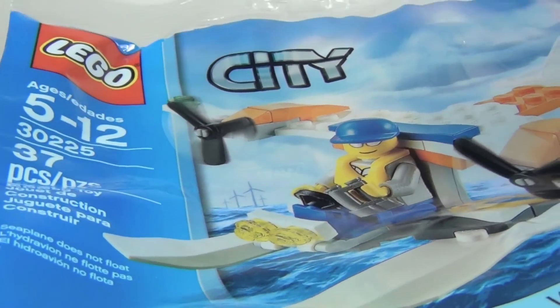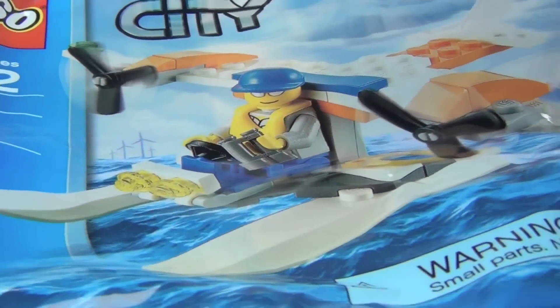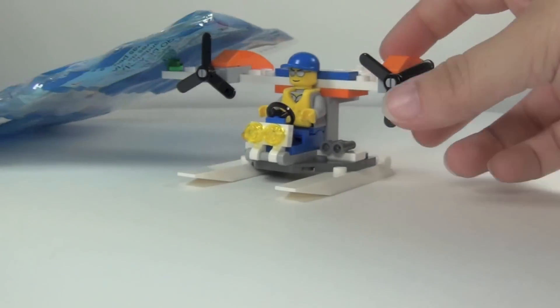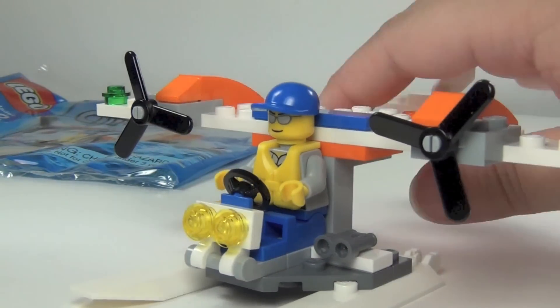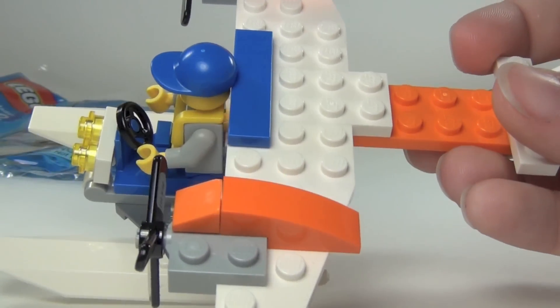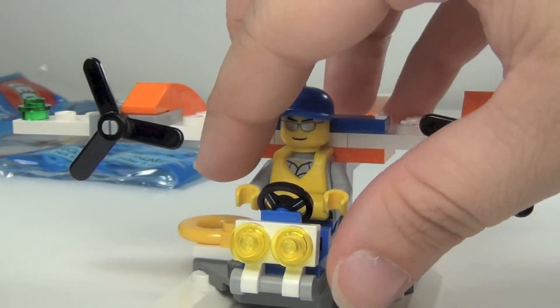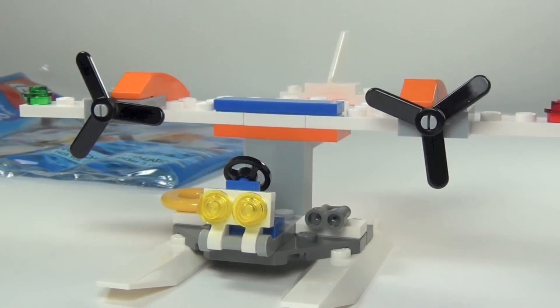But I just picked this up at Toys R Us. And I thought it was pretty cool, so I decided to review it for you guys. You can see, here's the little plane. It's got orange accents on it. And you do have your little Coast Guard minifigure here.